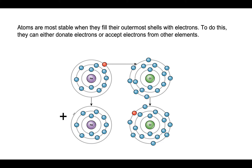Therefore, sodium has a positive charge when it loses an electron. Chlorine gains the electron and has one extra electron, so it gains a negative charge. We now have a sodium ion with one positive charge and a chloride ion with one negative charge.